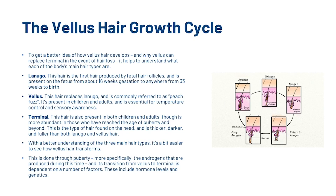To understand vellus hair we're now going to look at the vellus hair growth cycle. To get a better idea of how vellus hair develops and why vellus can replace terminal in the event of hair loss, it helps to understand each of the body's main hair types. The first is lanugo — the first hair produced by fetal hair follicles, present on the fetus from about 16 weeks to anywhere from 33 weeks to birth.